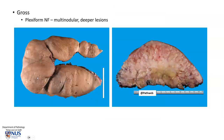Plexiform neurofibromas, as seen here, are multi-nodular lesions, and they tend to be quite deep. We can see that this is covered by skin, but we can appreciate this nodular appearance with multiple nodules over a very large area — more than 15 centimeters in diameter. This kind of multi-nodular appearance is what we tend to see on the cut surface.